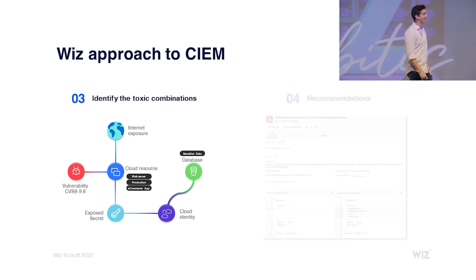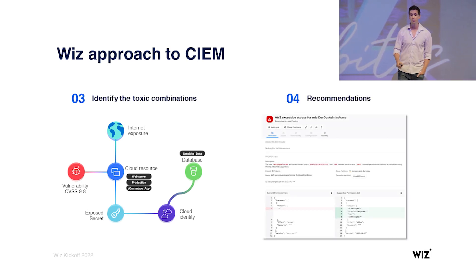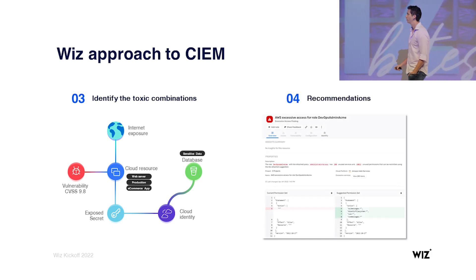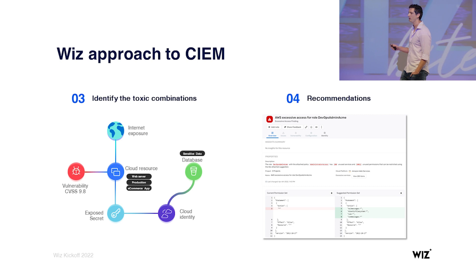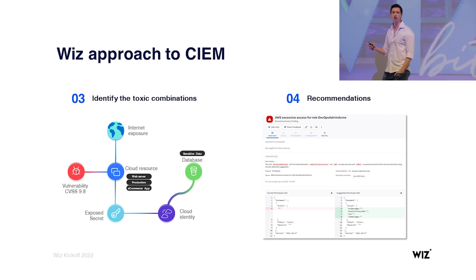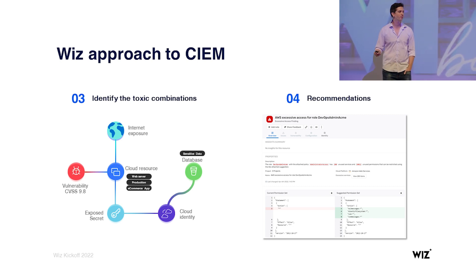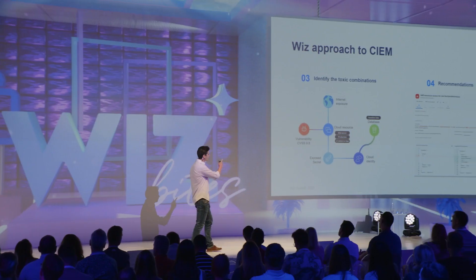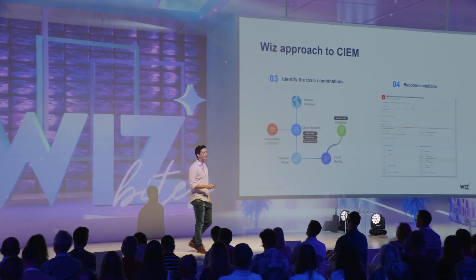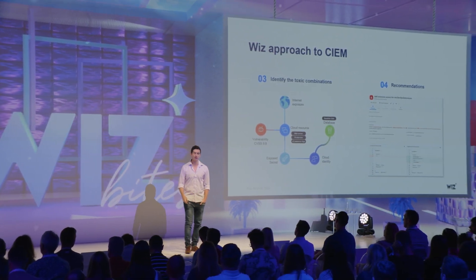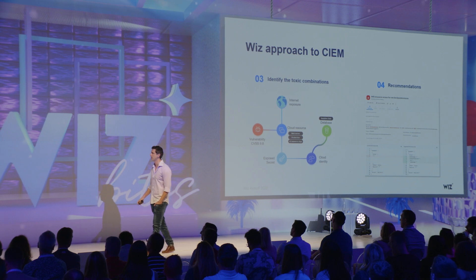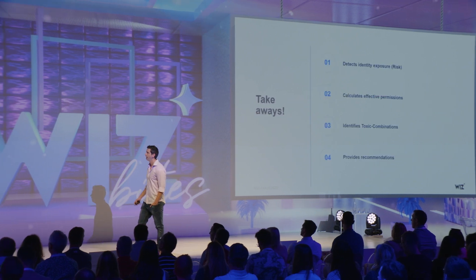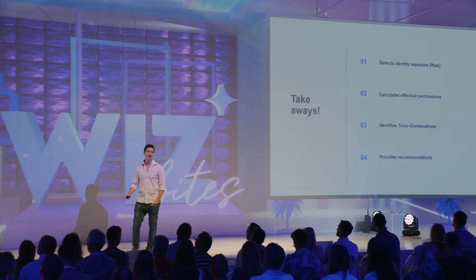And the last thing is recommendations. We really want teams not to only know that they have the risk. Great, I have the risk — so what? This is what you can do, this is what you can fix, and this is how you can fix it. And these are the four points I want you to take from here, and also bring back to customers.